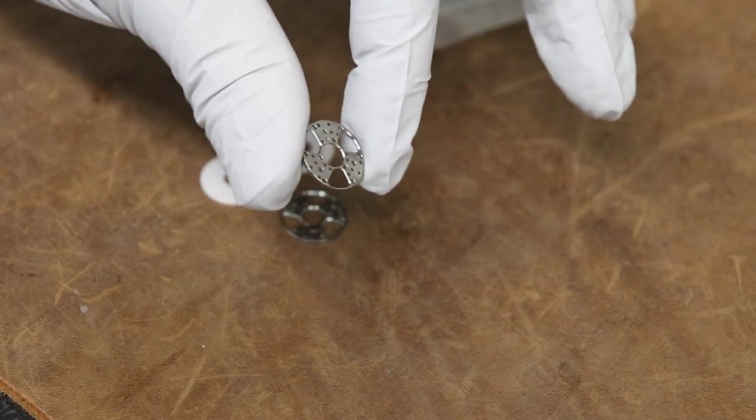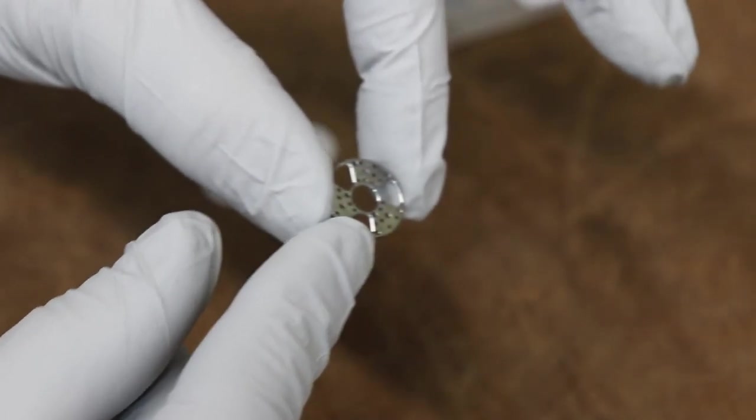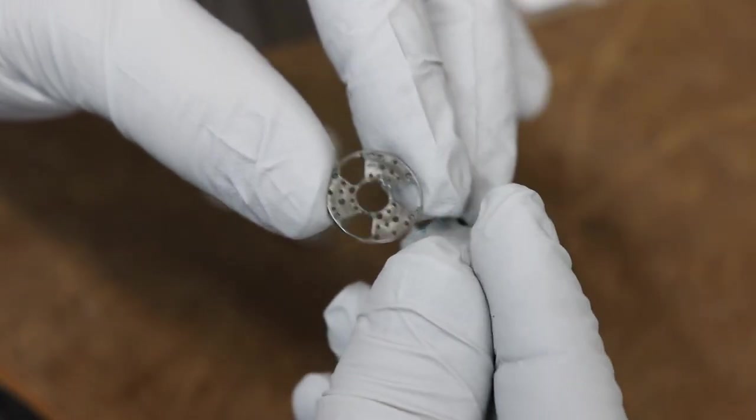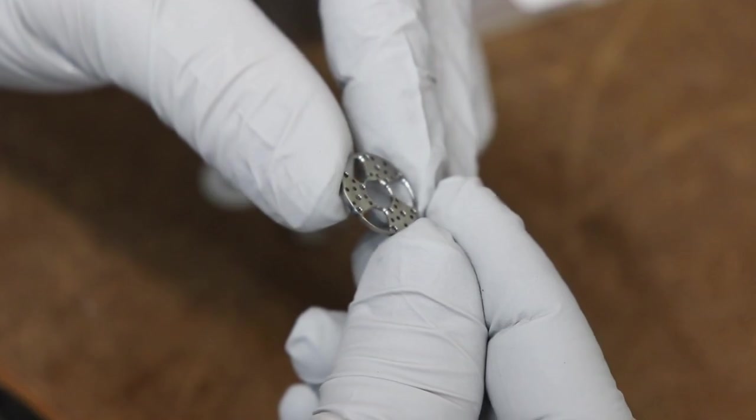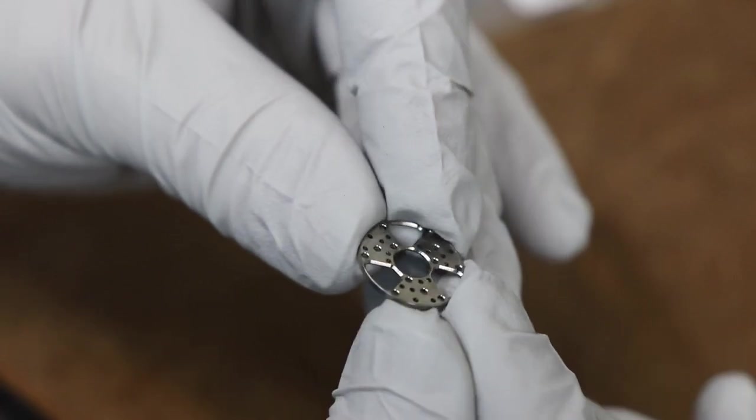All right, so here's a couple of the bearing cages. Hopefully you can see just how awesome these things are. I really like these parts. They're so small it's hard to even show you all the details, see how close I can get.